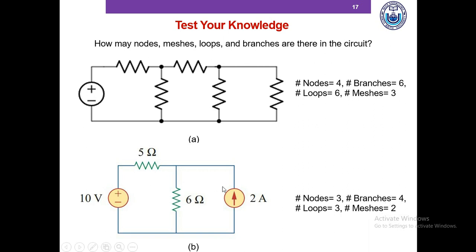Hopefully you've been able to identify the nodes. Here we have nodes one, two, and three — all of these points belong to the same nodes. The number of meshes is this one — with 5Ω, 6Ω, and 10 volts — and the other one: two meshes. Branches is the number of circuit elements: one, two, three, four — there are four branches. Loops: this one is a loop, this one is a loop, and this one is a loop — so there are three loops in the circuit. Hopefully you now have a clear idea of what nodes, branches, loops, and meshes are.